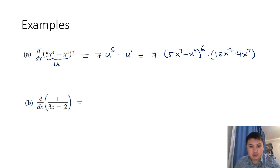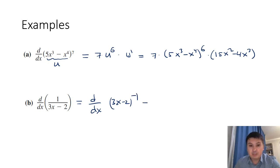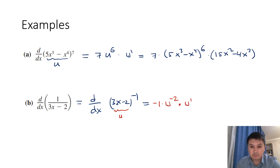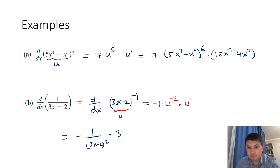Next, let's take the derivative of 1/(3x − 2). We could apply the quotient rule, but the power rule is easier if we rewrite it as (3x − 2)^(−1). Applying the power rule with u = 3x − 2: the exponent −1 comes to the front, giving −1 · u^(−2) · u′. Since u^(−2) = 1/(3x−2)², and u′ = 3, the result is −3/(3x − 2)².